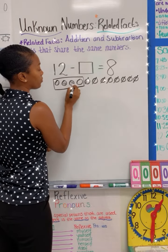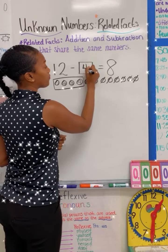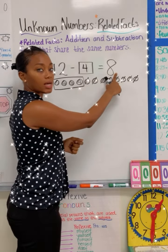One, two, three, four. Therefore, 12 minus four gives me a difference of eight.